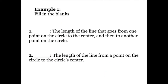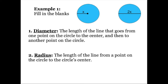Now let's look at a few example problems. The first problem is a fill-in-the-blank question, so go ahead and pause the video if you want to try it. To get this one correct, you just have to remember the definitions of the radius and the diameter. The diameter is the length of the line that goes from one point on the circle to the center and then to another point on the circle, and the radius is the length of the line from one point on the circle to the circle's center.